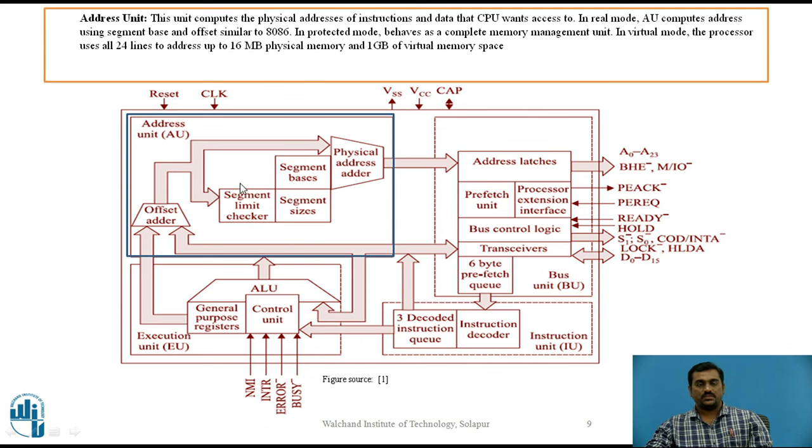As you can see here, in this processing unit, there are various blocks. The physical address adder gives the 20-bit or 24-bit physical address depending on the mode which is operating. The input to this physical address adder are this offset and the segment base. This offset address is the output of this offset adder. The segment limit checker checks whether the current offset address does not exceed the segment size that is 64 kilobyte.